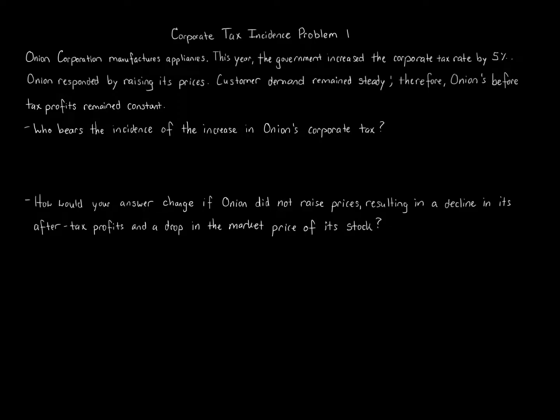Corporate tax incidence problem one: Onion Corporation manufactures appliances. This year, the government increased the corporate tax rate by five percent. Onion responded by raising its prices. Customer demand remained steady, so Onion's before-tax profits remain constant. Who bears the incidence of the increase in Onion's corporate tax? How would your answer change if Onion did not raise prices, resulting in a decline in its after-tax profits and a drop in the market price of its stock?